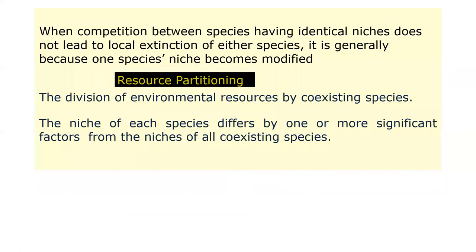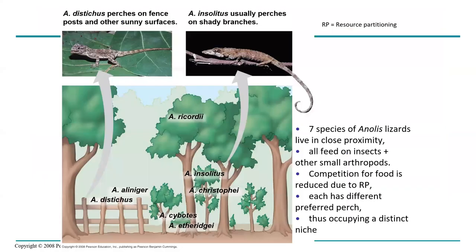Resource partitioning involves the division of environmental resources by coexisting species, allowing two different species occupying the same environment to co-exist. The niche of each species differs by one or more significant factors from the niches of all coexisting species. Returning to the lizard example, some occupy the trunk and eat whatever they find there, some are on the upper part of the trees, and some are on the shrub layer.